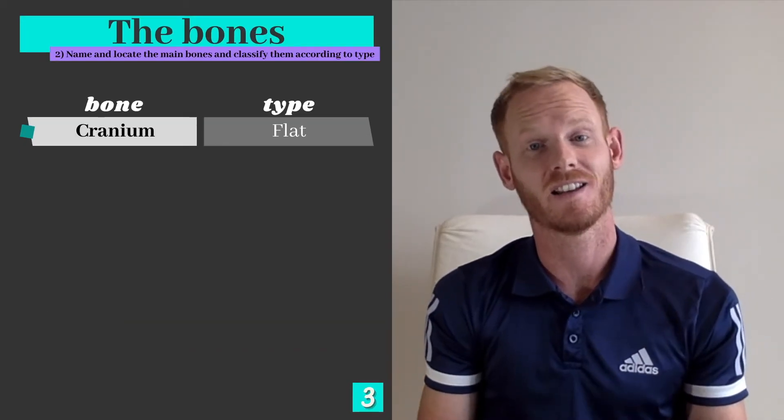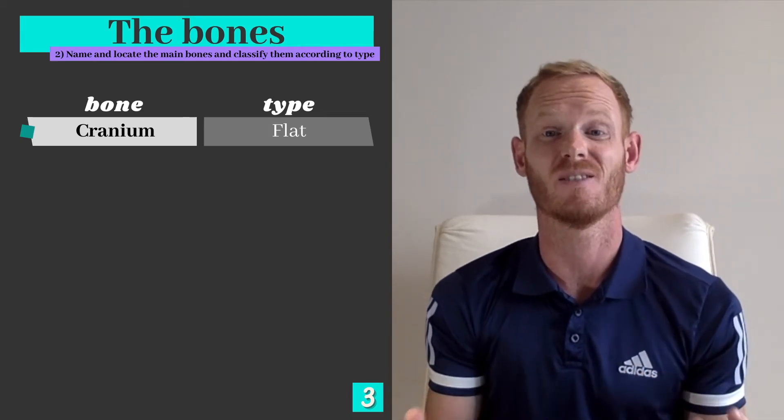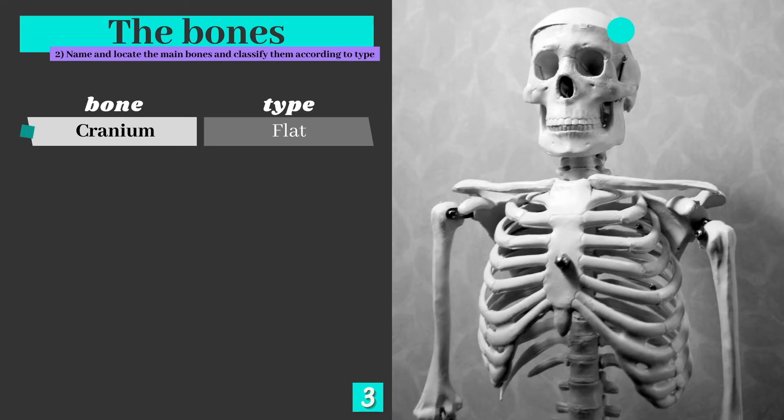We're now going to take a look at our second learning objective, which is to name and locate the bones and classify them according to type. The first is the cranium, otherwise known as the skull. It's a flat bone and its main role is protecting the brain.